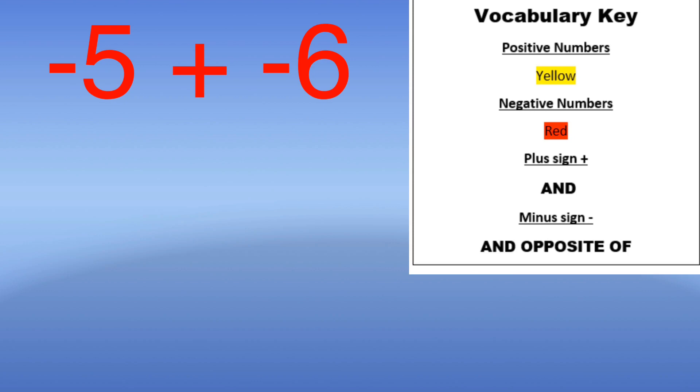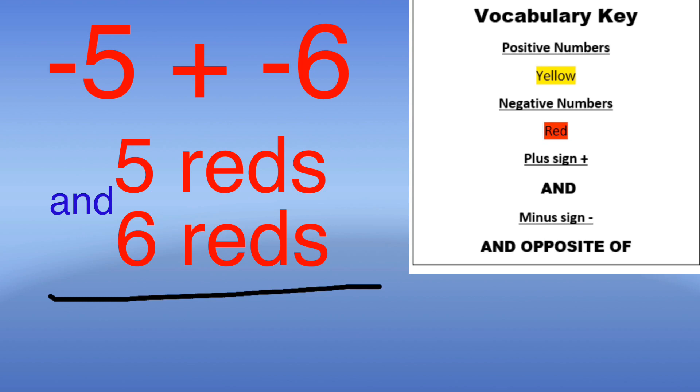Let's take the abstract out of math by replacing these numbers and symbols with words. Let's start off with negative five plus negative six. Using our vocabulary key this turns into five reds and six reds. Since I have a bunch of reds I'm going to just put them all together to get a total of eleven reds, making my answer negative eleven.